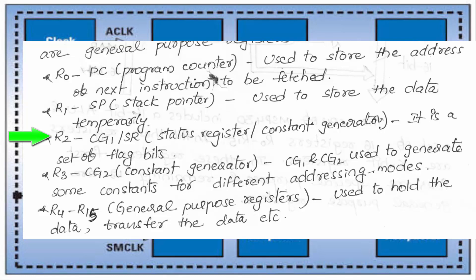R2 is the Status Register, which is a set of flag bits used to store the current status flags. R3 is the Constant Generator, consisting of CG1 and CG2, used to generate some constant values for different addressing modes.